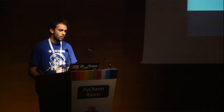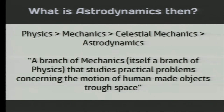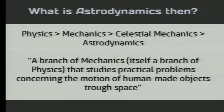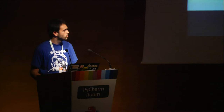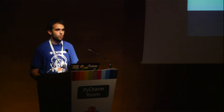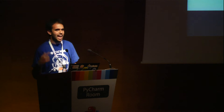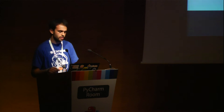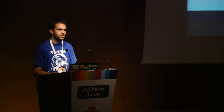So what is astrodynamics exactly? It's a branch of celestial mechanics that studies the motion of human-made objects through space. There are essential differences between studying the motion of the planets and the motion of human-made objects, because satellites, rockets and similar objects are so small that we have to take into account all perturbations that might act on them. They also have propulsion means so they can act on their own trajectory and correct their velocity. And this complicates everything.